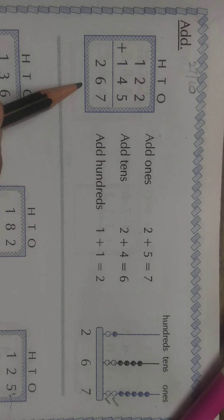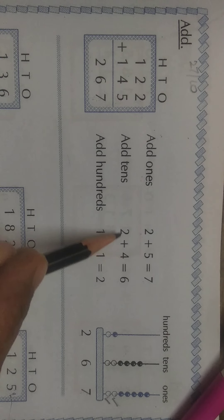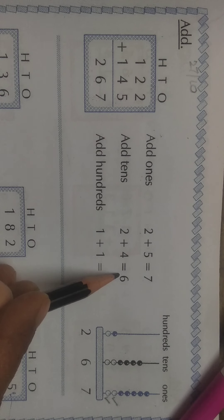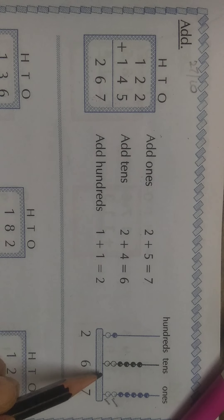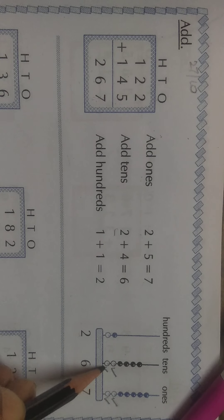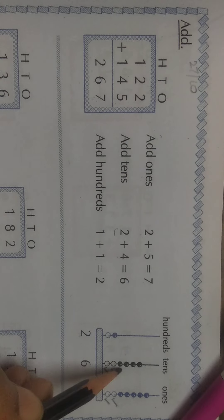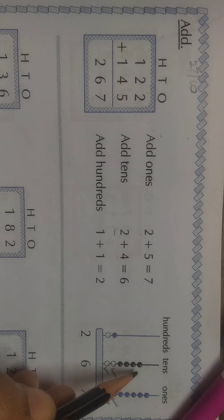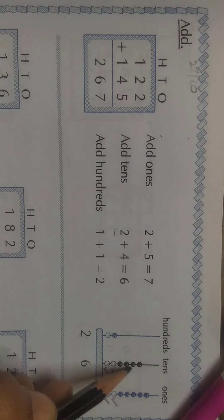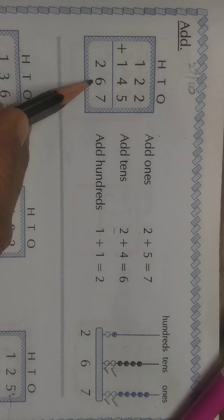Now, we will add tens place numbers. Tens. What are the numbers in tens? 2 and 4. 2 plus 4 is equal to 6. Same thing is shown on the abacus. For 2, two white beads are drawn and for 4, four black beads are drawn. So, total how many beads are there in tens? 1, 2, 3, 4, 5, 6. The answer is 6.